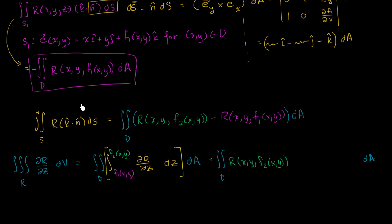And from that, we subtract r when z is this, minus r of x, y, f1 of x, y.